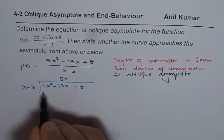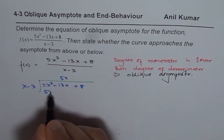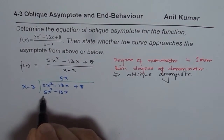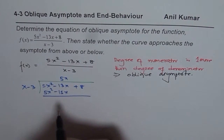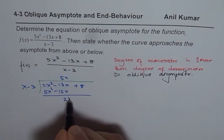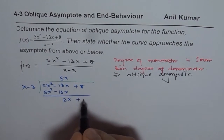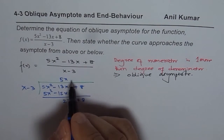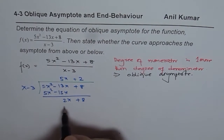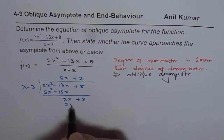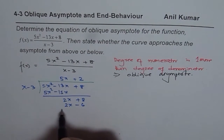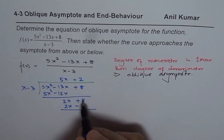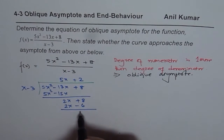x minus 3 goes into 5x² minus 13x plus 8 as follows: 5x times (x minus 3) gives 5x² minus 15x, which leaves 2x plus 8. Then 2 times (x minus 3) gives 2x minus 6, leaving a remainder of 14.